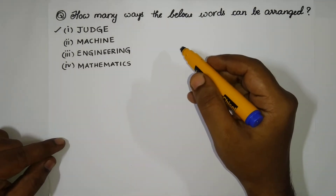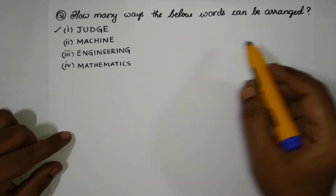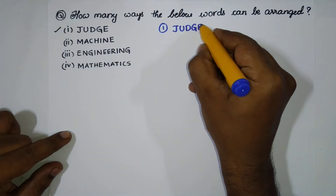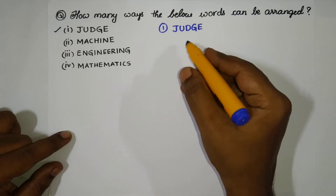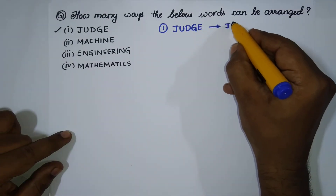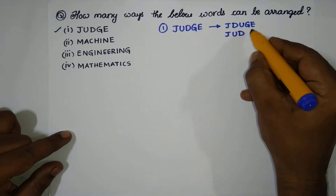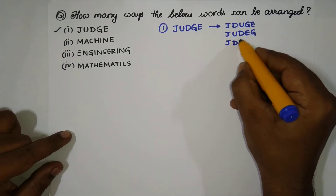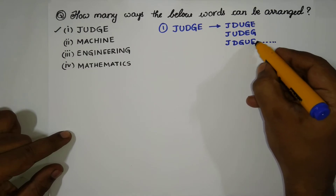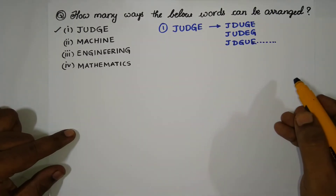One of the basic questions from permutations and combinations is: how many ways can the below words be arranged? For example, with the word JUDGE, I can arrange it as J-U-D-G-E, or J-D-U-G-E, or J-U-D-E-G, and so on. Doing this manually takes a lot of time, so there is a very simple technique to solve these kinds of problems.